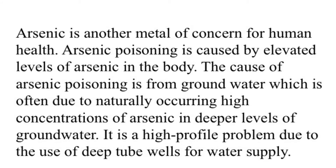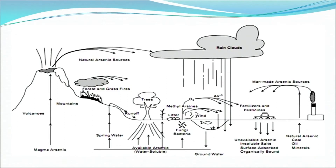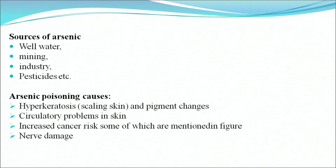Next is arsenic toxicity. Arsenic is another matter of concern for human health. Arsenic poisoning is caused by elevated levels of arsenic in the body, often due to naturally occurring high concentrations of arsenic in deeper levels of groundwater — a high-profile problem due to the use of deep tubewells for water supply. Sources of arsenic include well water, mining, industry and pesticides. Arsenic poisoning causes hyperkeratosis or scaling skin, pigment changes, circulatory problems in skin, increased cancer risk and nerve damage.